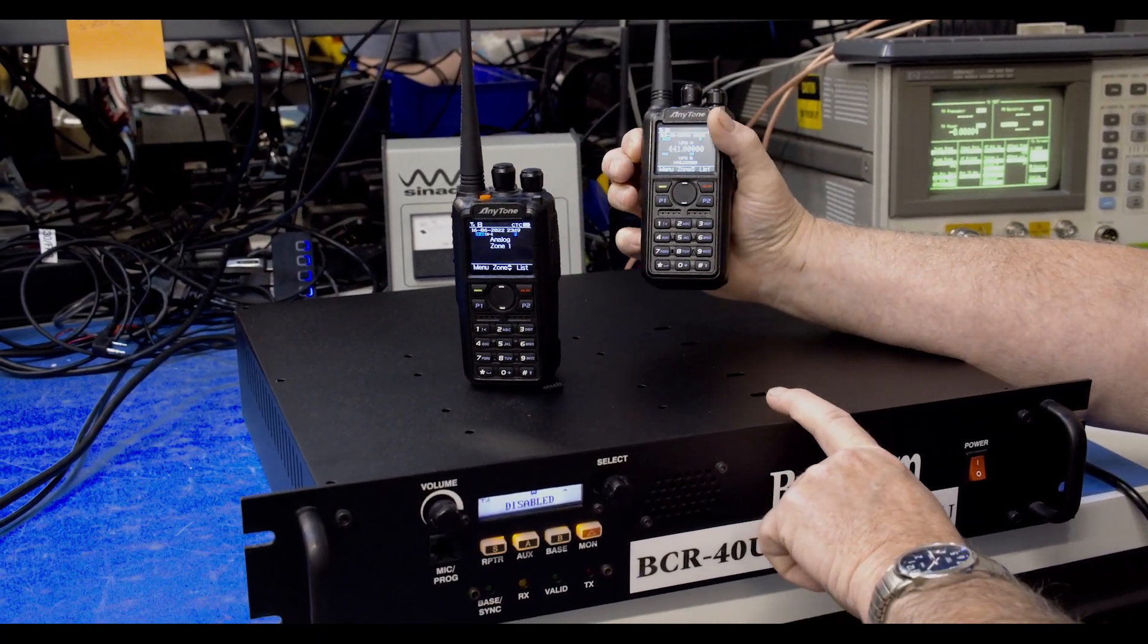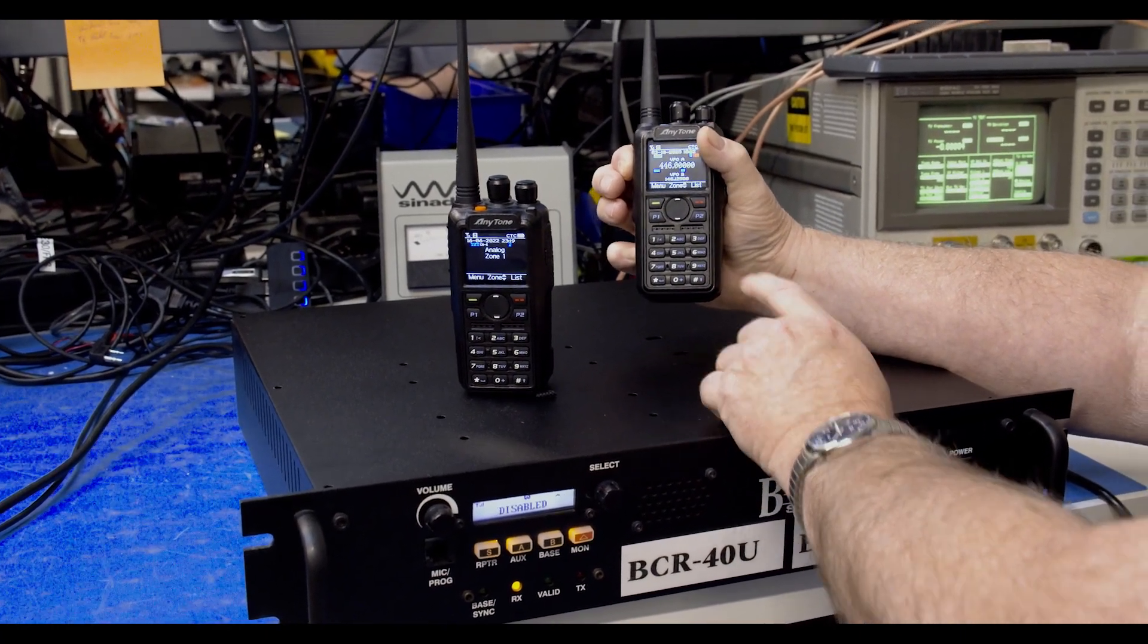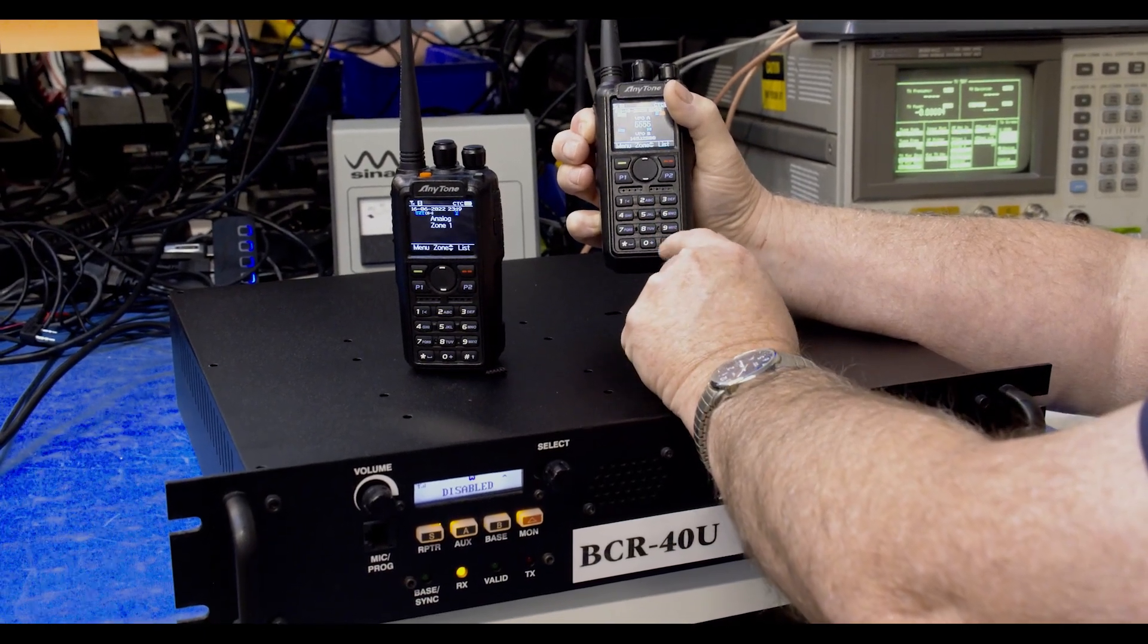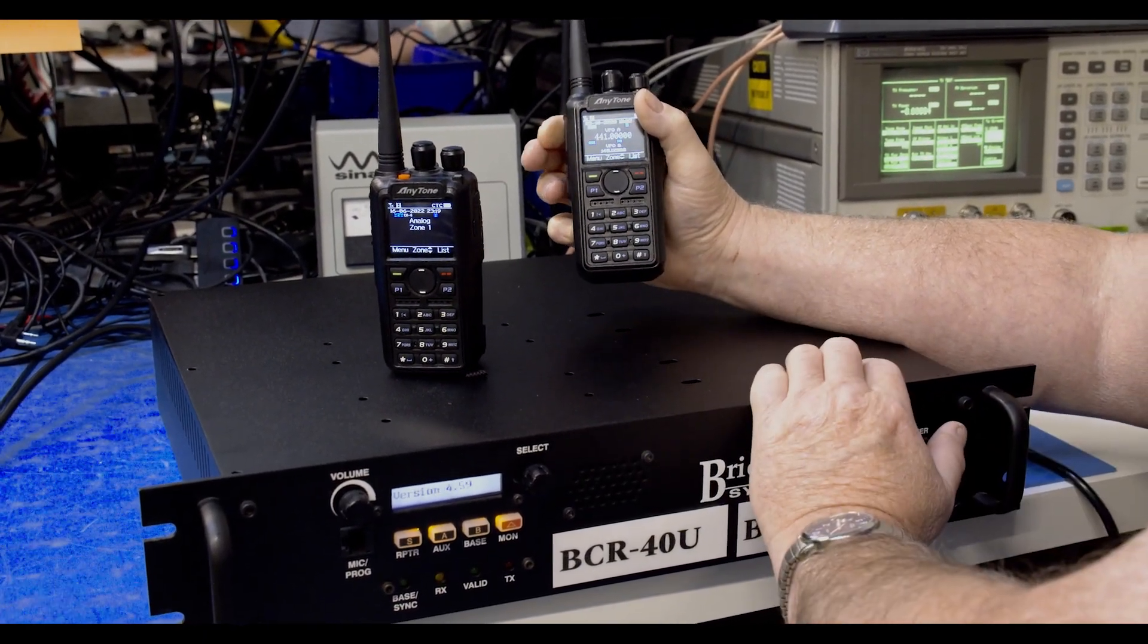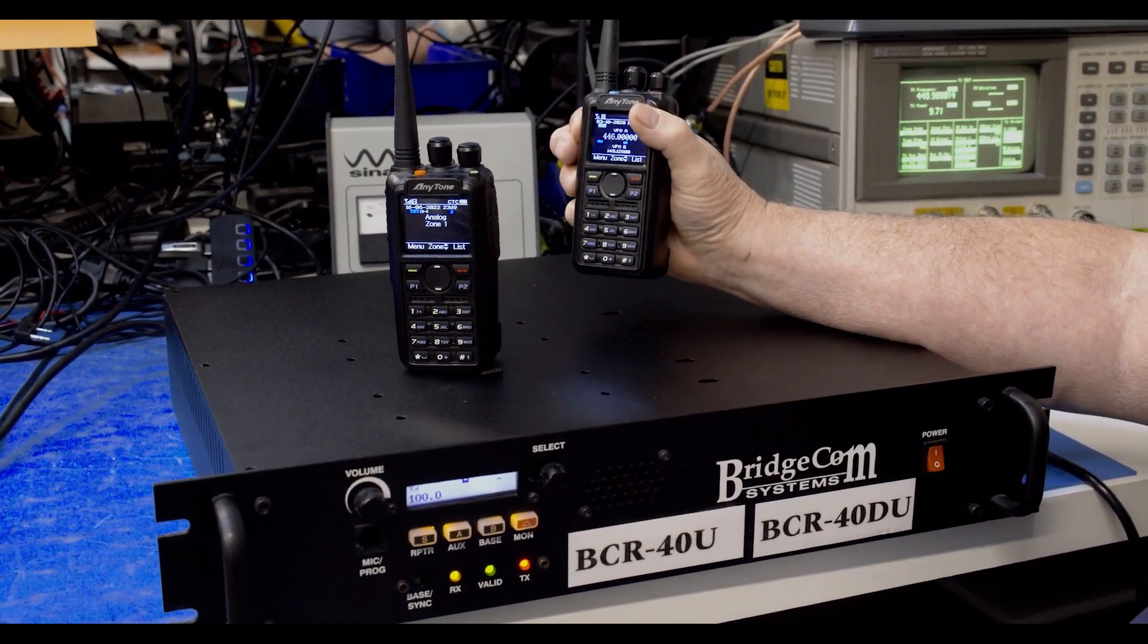So now we're going to key up the repeater as tone 100 and enter 5555 pound. The repeater reboots and now we're active again.